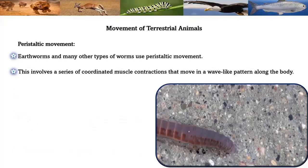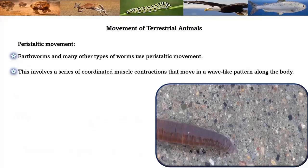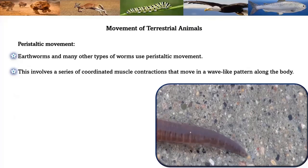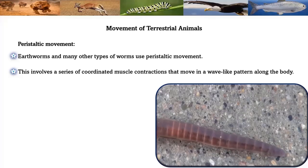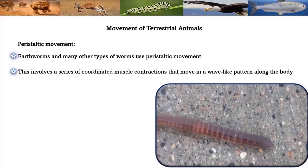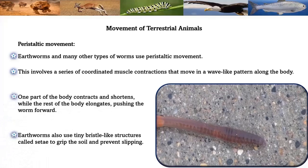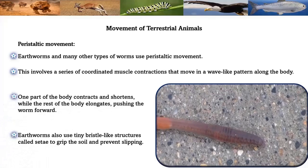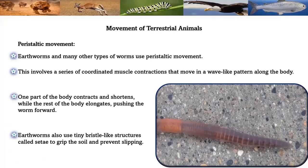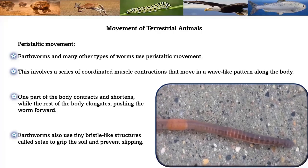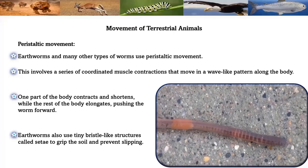Peristaltic movement: earthworms and many other types of worms use peristaltic movement. This involves a series of coordinated muscle contractions that move in a wave-like pattern along the body. One section of the body contracts and shortens while the rest elongates, pushing the worm forward. Earthworms also use tiny bristle-like structures called setae to grip the soil and prevent slipping.